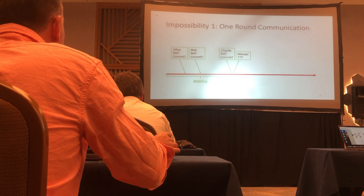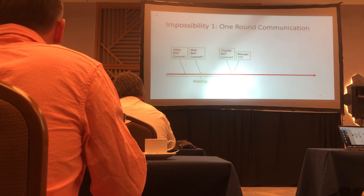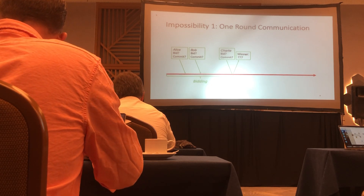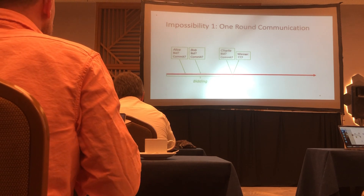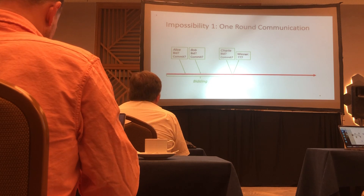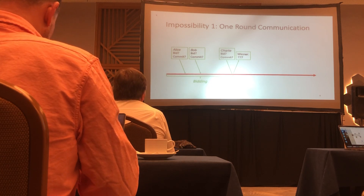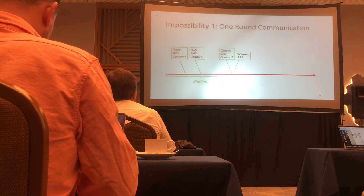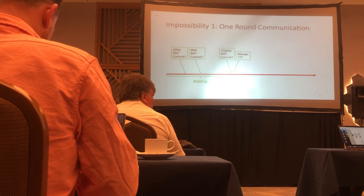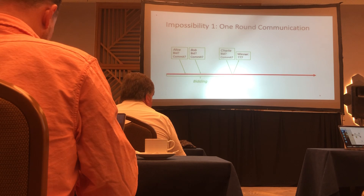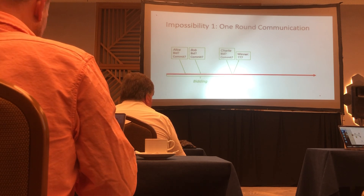Now I'm going to introduce some impossibilities. Impossibility one is that we really cannot have one round of communication for the bidder to submit its bid in a sealed bid auction. If the bidder submits the bid during the bidding period in clear text, it violates the sealed bid property. But if we let the bidder submit only a commitment, then we don't have a phase to reveal. So one round of communication is truly impossible for achieving a sealed bid auction.